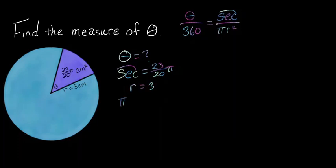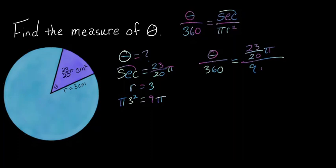So area, theta, which is equal to pi radius squared, would be equal to 9 pi. Theta over 360 is equal to 23 over 20 pi divided by 9 pi.